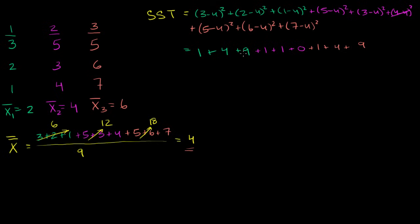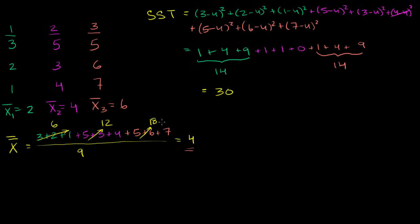So we have 1 plus 4 plus 9, which is 14. We also have 1 plus 4 plus 9, another 14. And then 2 more from the middle group. So 14 plus 14 is 28, plus 2 is 30. The total sum of squares is equal to 30.